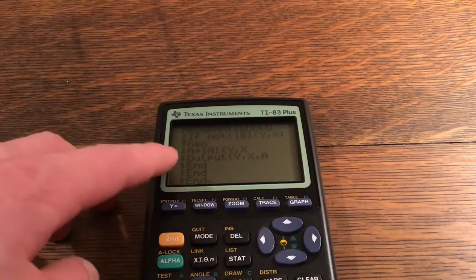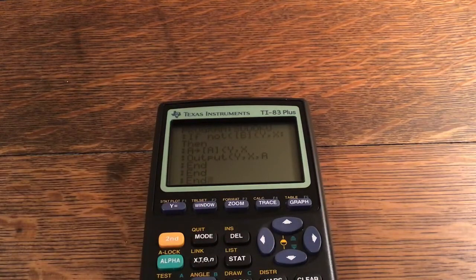If not matrix B at Y comma X, then A store into matrix A at Y comma X, output at Y comma X comma A. End, end, end, end, end. There's three ends right there. And that is the whole entire program.